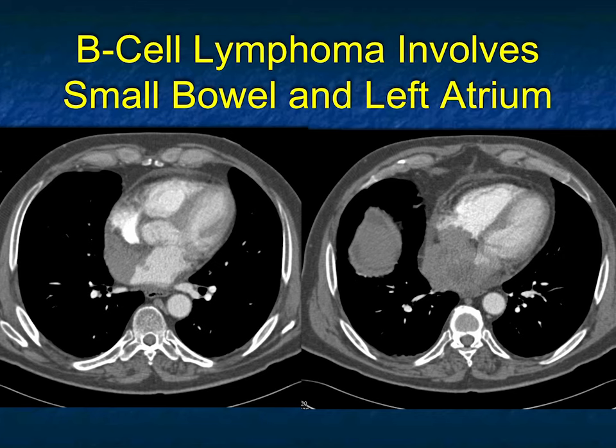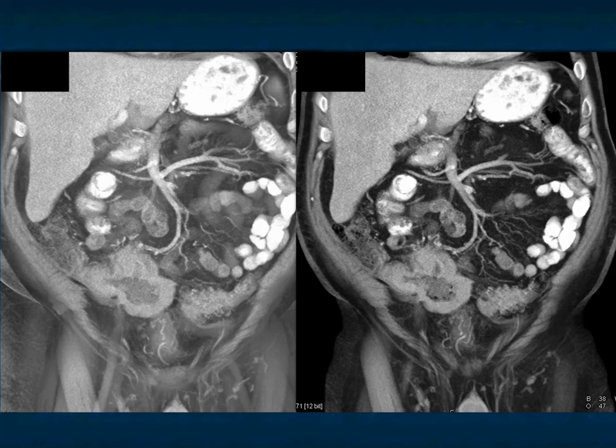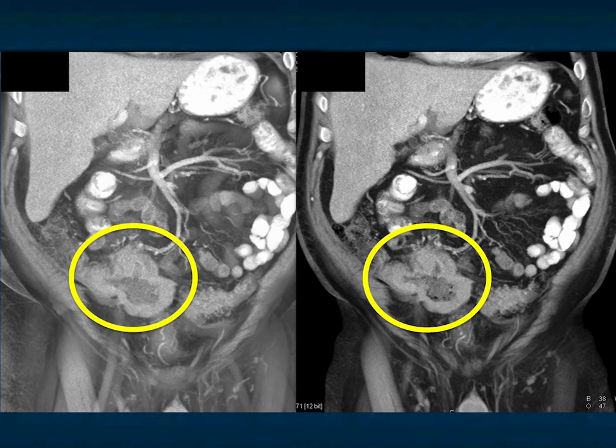When you scan beyond the left and right atria, you can see how impressive the mass is. Scanning downward to the right lower quadrant, there's an ulcerating tumor that looks like lymphoma — lymphoma involving the heart, sometimes primary in the heart and involving bowel secondarily, which was likely the case here. This is a beautiful example of B-cell lymphoma involving the heart with ulceration involving the small bowel.